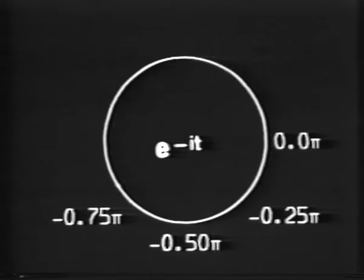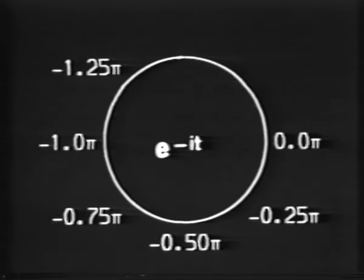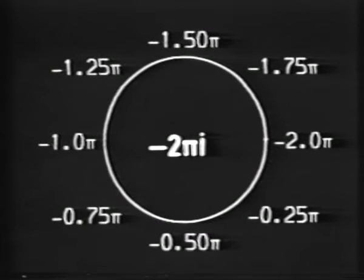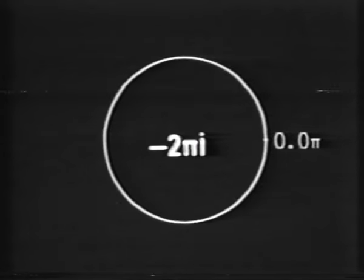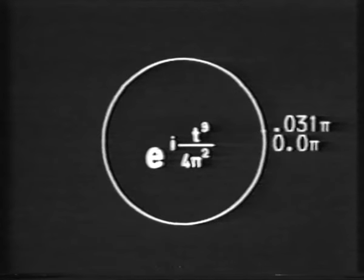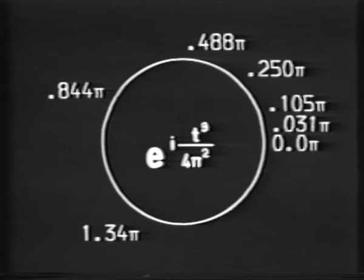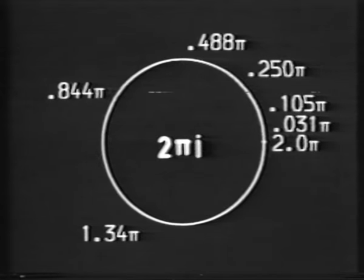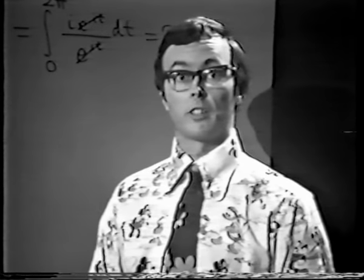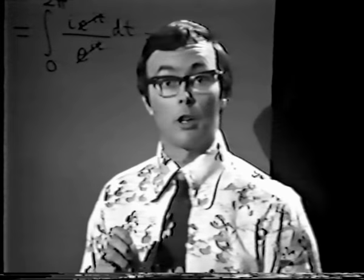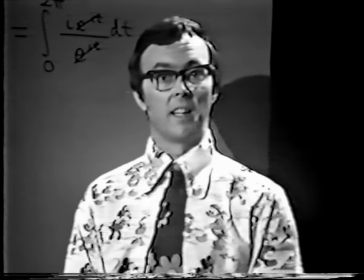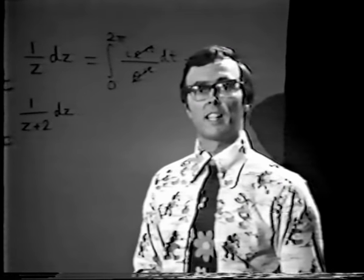What happens if we take z = e^(-it)? This time the point goes clockwise, and the value of the integral is just -2πi. So as you've just seen, if we stick to our two conventions — going around just once and in an anticlockwise direction — we always get the right answer, 2πi. But if we break these conventions, going around several times or backwards, we will usually get a different answer.